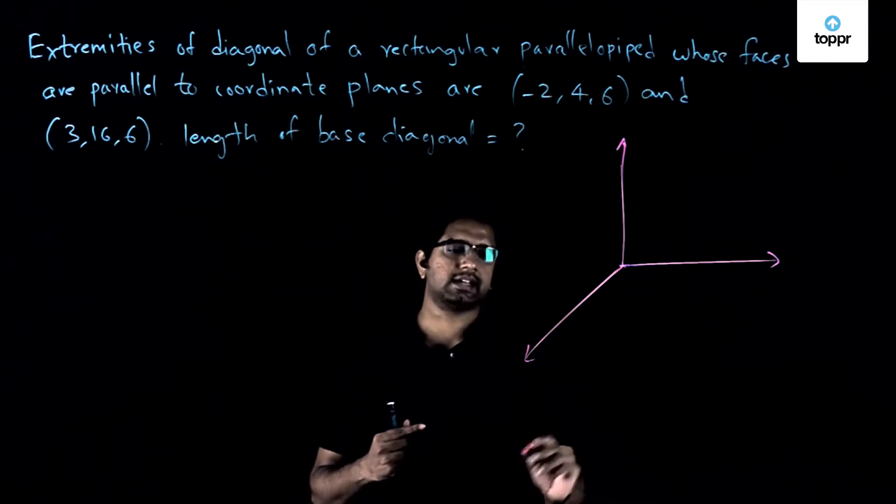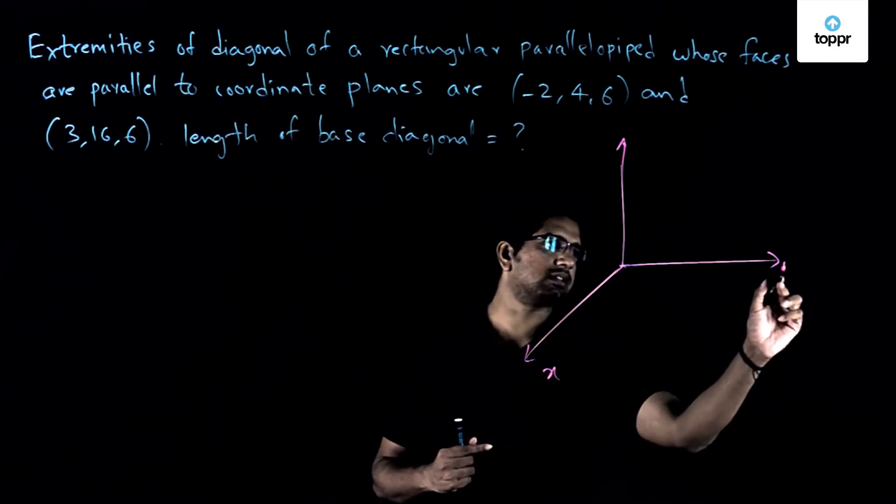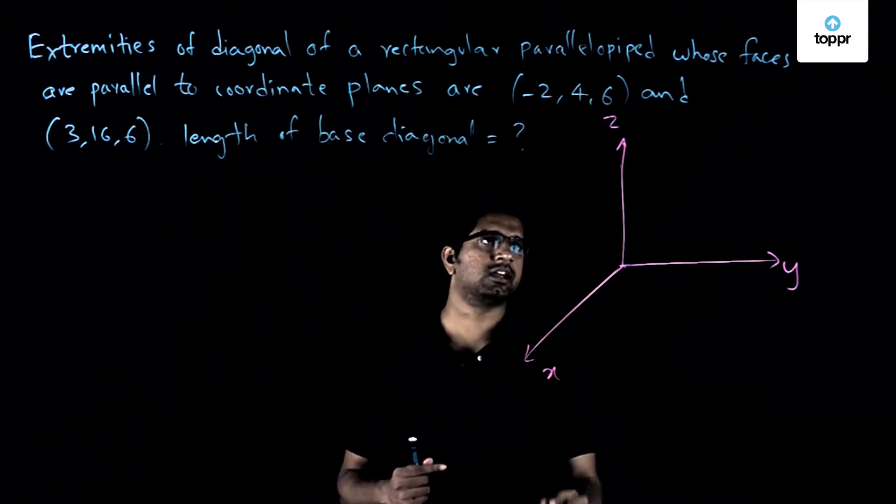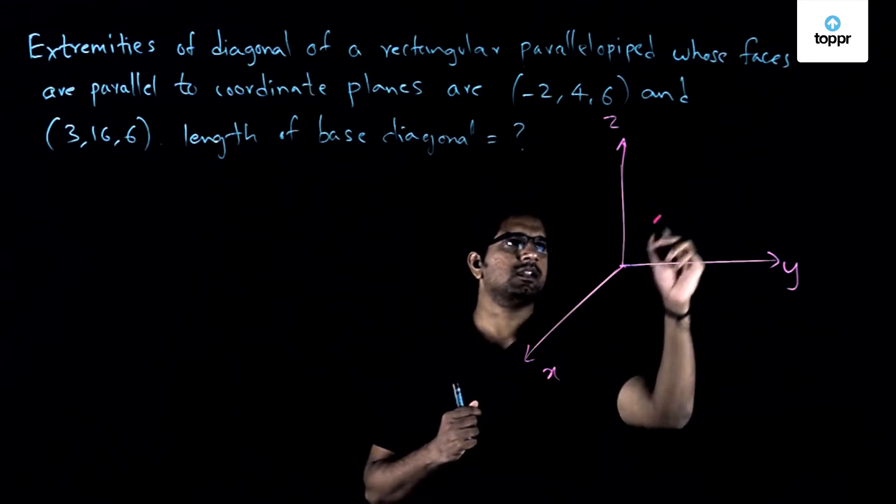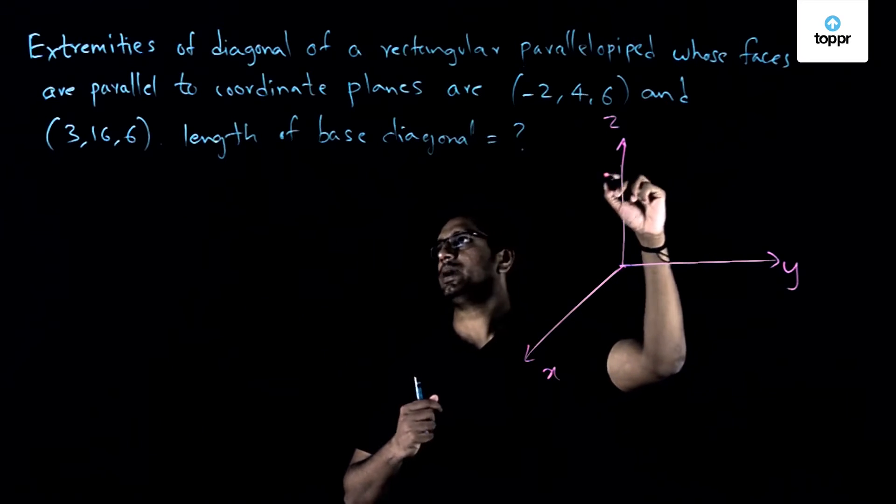So let's mark the axis first. So let's take this as x, y and z axis in order to get a right-handed coordinate system. Once we have this, let's see what we can do.